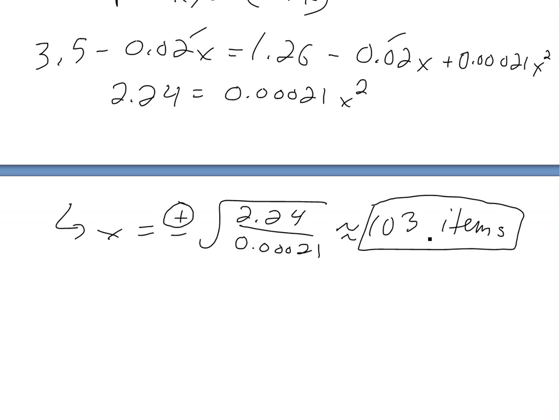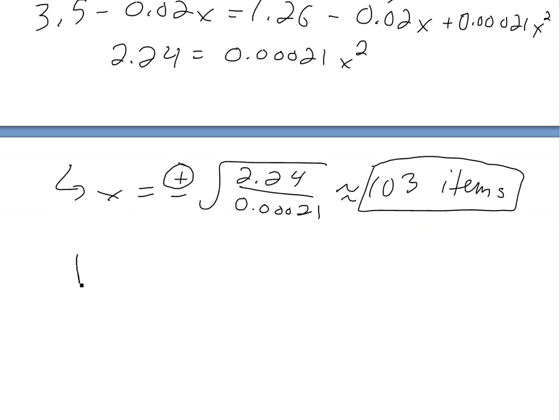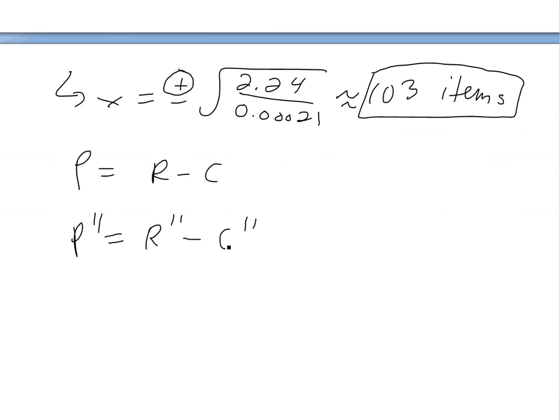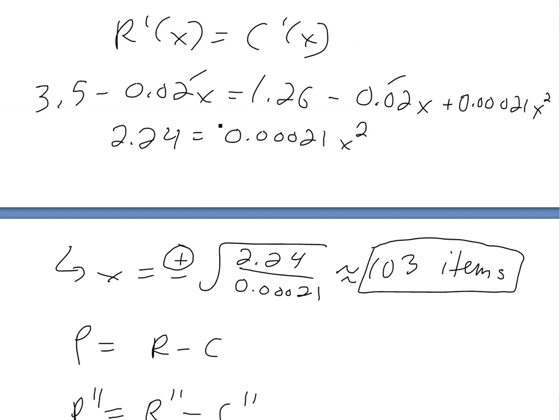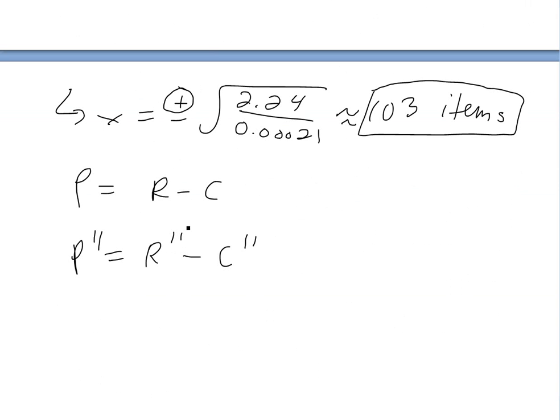Now to ensure that this is actually the production level to get the maximum profit, we know that profit is just equal to revenue minus the cost, how much money you make minus how much you spend. And if you take a derivative up to the second derivative, you're just going to get the second derivative of this one's equal to second derivative of revenue minus second derivative of cost.